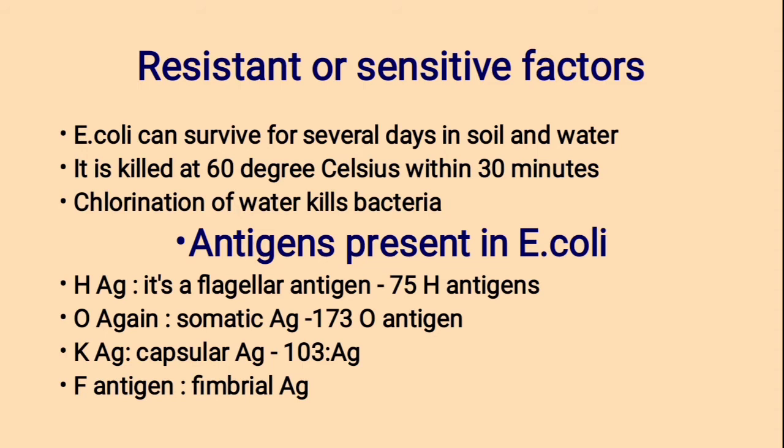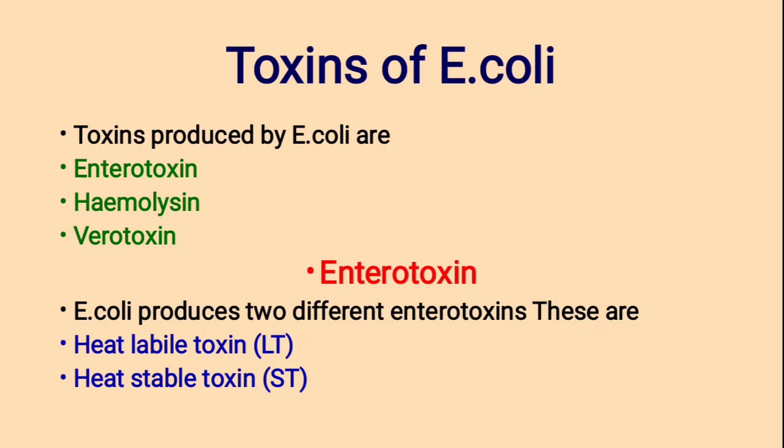Toxins produced by E. coli are mainly three types: first, Endotoxin; second, Hemolysin; third, Verotoxin. Regarding Endotoxin — E. coli produces two different endotoxins: heat-labile toxin and heat-stable toxin. Heat-labile toxin is destroyed by heating.